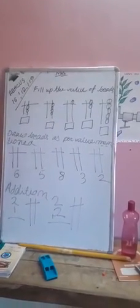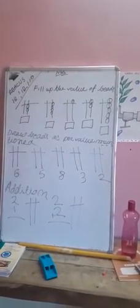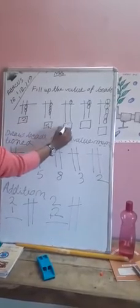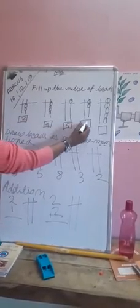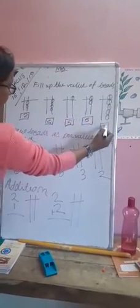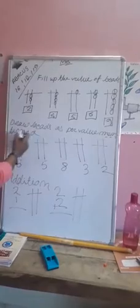Drop us plus nursery. Fill out the value of bees: 2, 4, 5, 6, 5, 6, 7, 8, 9. Next draw bees as part of the addition.